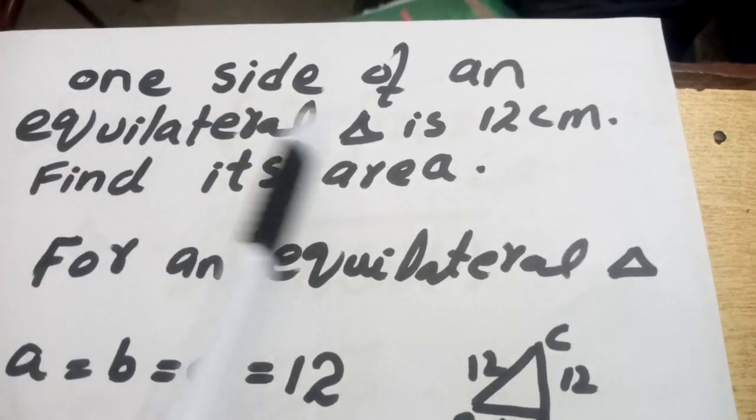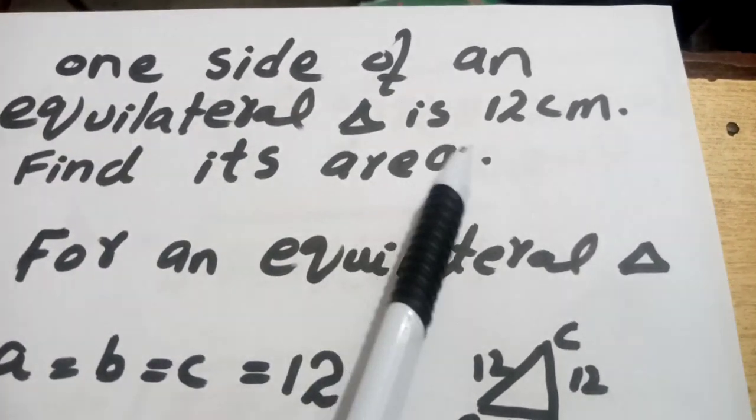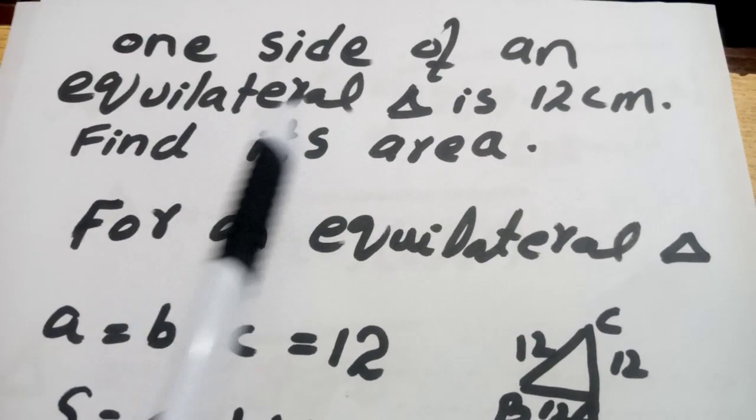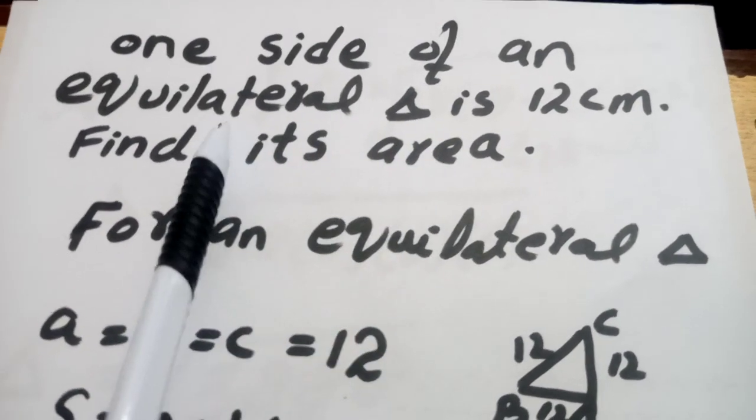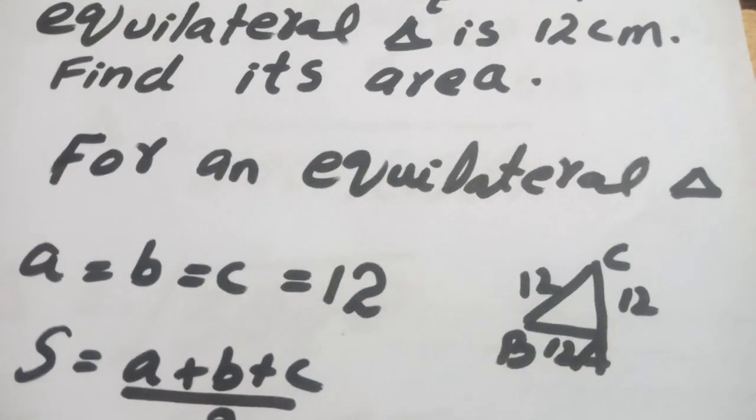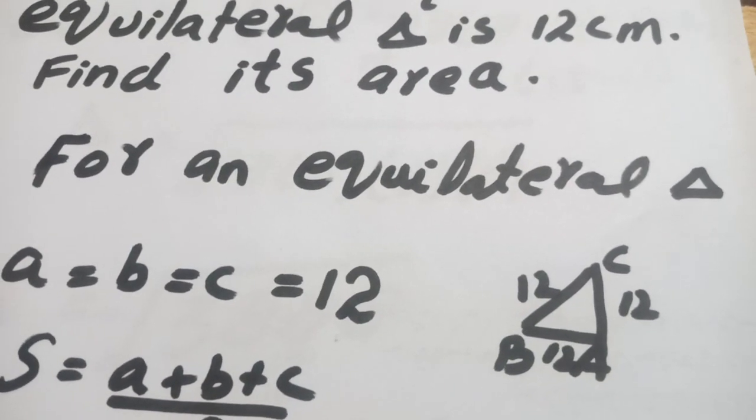Let's go. Now we have one side of an equilateral triangle is 12 centimeter. Find its area. Now what is an equilateral triangle? Equilateral triangle is where the measure of all the length sides is same or equal.